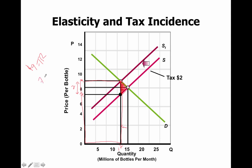We've got 7 times Q, which equals what the producers actually take home. The producers aren't going to take home all 9 times 12, because they have to write a check to the government for 2 times 12.